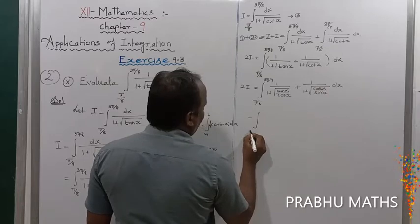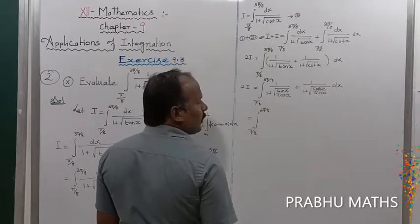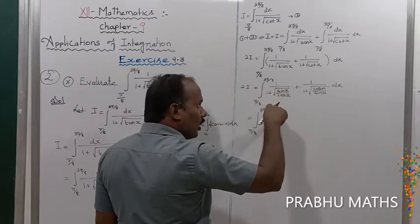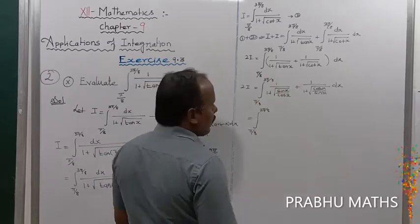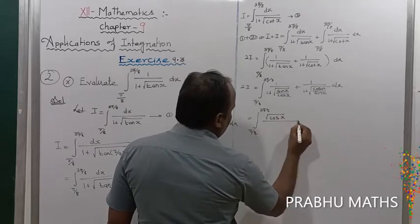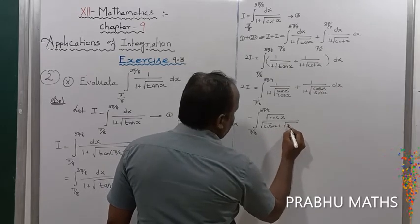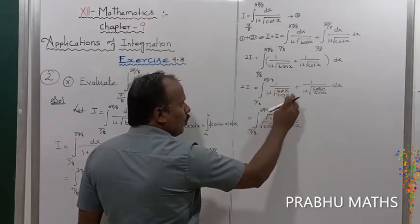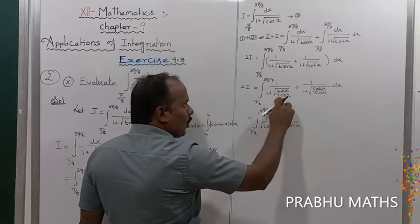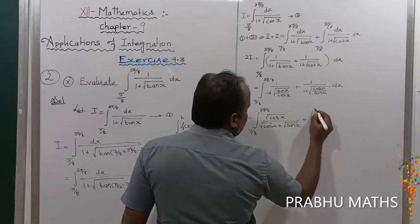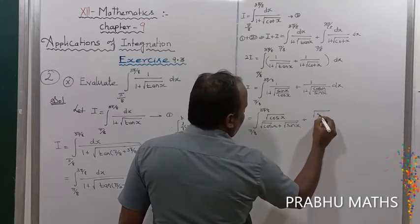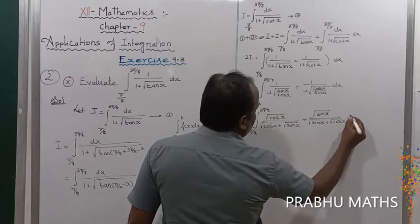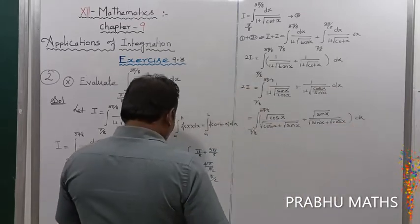Multiplying through by the denominators: the first term becomes root of cos x divided by (root of cos x plus root of sin x), and the second term becomes root of sin x divided by (root of sin x plus root of cos x), into dx. The denominator is the same for both terms.